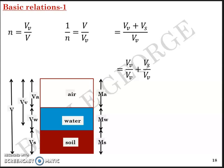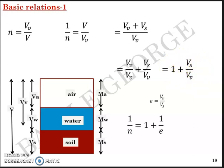Dividing through, I get 1 plus Vs/Vv. Since void ratio e equals Vv/Vs, Vs/Vv is the reciprocal of e, giving 1 plus 1/e. Therefore 1/n equals 1 plus 1/e, or n equals e/(1+e). So porosity n is represented as e/(1+e), where e is the void ratio. This is a very simple but important relation derived directly from the three-phase system diagram.